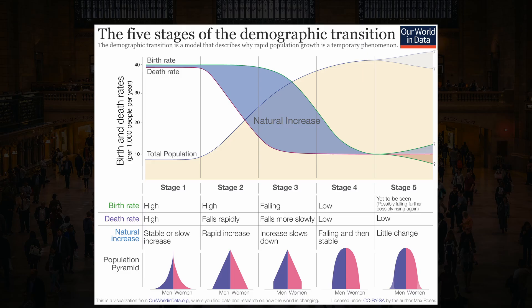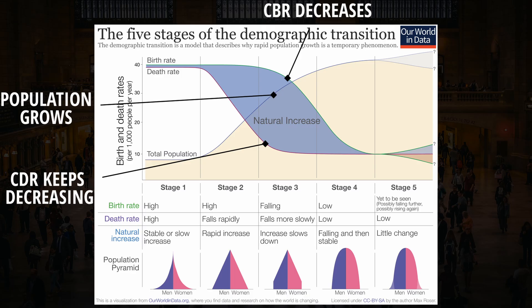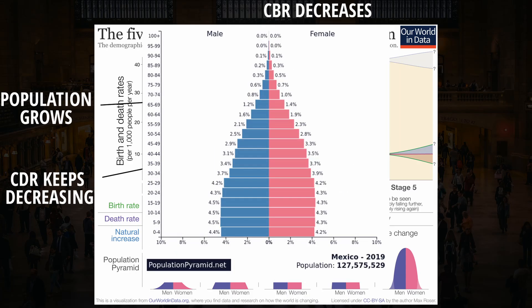Then in the third stage, as the country progresses, the death rate will continue to decrease as healthcare improves, and eventually birth rates will start to decrease as well. One reason birth rates decrease is because women become more educated, go to college, and pursue careers in their 20s, so they will not have as many children. Also, with development, the cost of living will increase, so it won't be as feasible to have as many children. Natural increase rates will still tend to be high in stage 3 countries, as the gap between CBR and CDR remains large, so the population is still growing. Mexico is a good example of a stage 3 country.